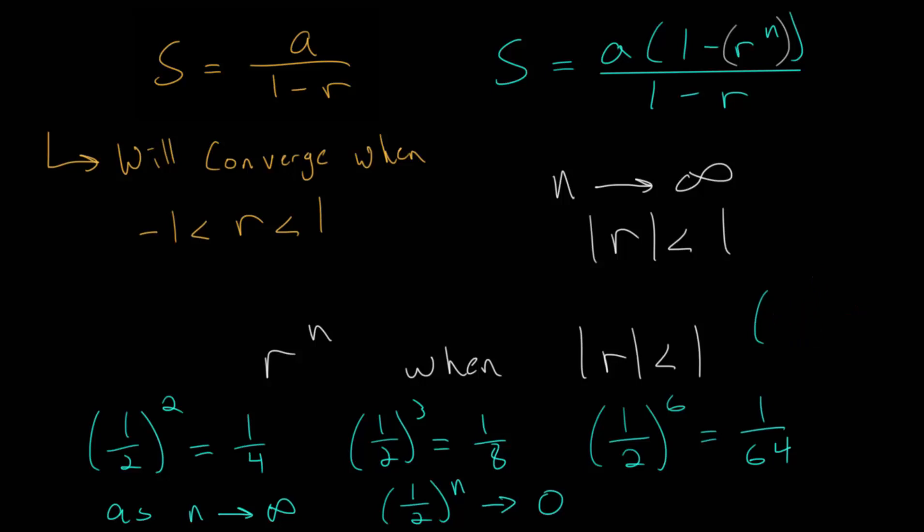So in general, we would say this term, r sub n, or r to the nth power, when r is a fraction, this will approach zero as n gets bigger. So as n goes to infinity, r to the n will approach zero.